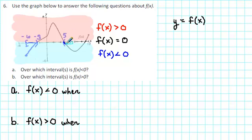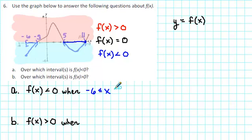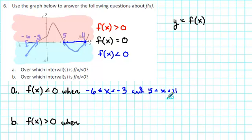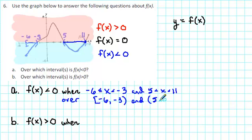The graph stays below the x-axis until we get to about 11. So I'll put another parenthesis and the number 11, and we'll shade everything in between because that's where the graph is below the x-axis. So when is f of x less than 0? It's less than 0 when x is between negative 6 and negative 3, and when x is between 5 and 11. In other words, f of x is less than 0 over the interval from negative 6 to negative 3, and over the interval from 5 to 11.